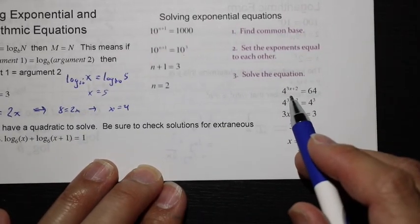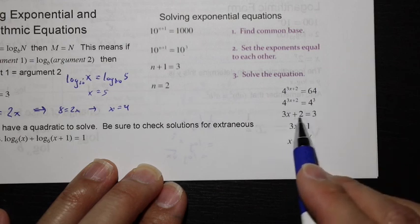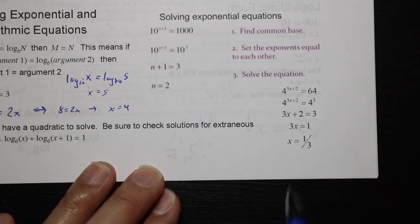Here's another example of finding a common base. We have 4^(3x + 2), and this 64 can be written as 4^3. Now we have the same base, 3x + 2 equals 3, 3x equals 1, x equals 1/3.